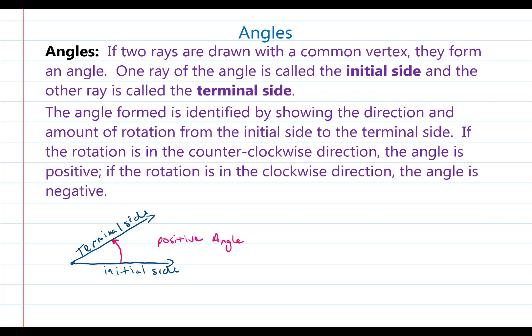What if I draw another angle? My initial side is still horizontal — I'm going to call that IS for short — and my terminal side is again diagonal, I'm going to call that TS for short. But in this case, I'm going to change the rotation. I'm going to start with my initial side but rotate clockwise around the angle to the terminal side. And if the rotation is in the clockwise direction, the angle is negative. So this is a negative angle.